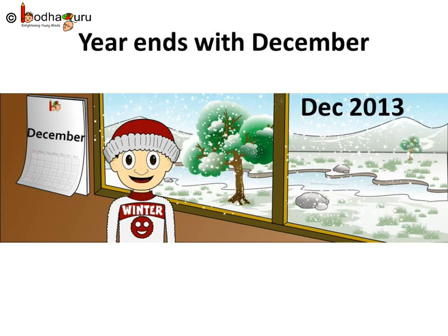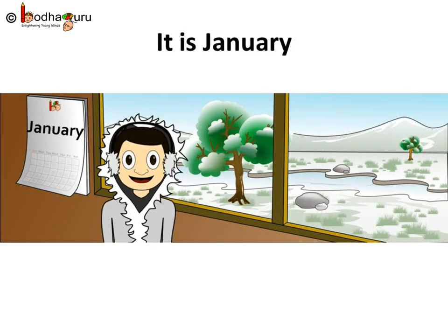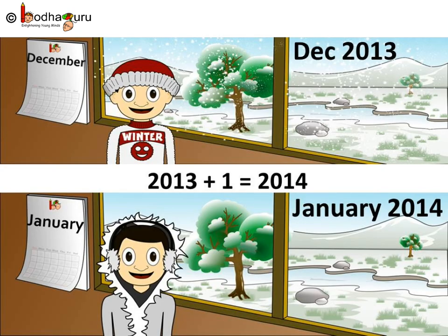So, after the month of December, January of the next year comes again and we call it a new year. So after December 2013, January will come and since it will be a new year, it will be 2014 — that is 2013 plus 1, which is the year 2014.